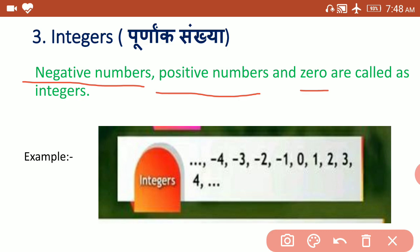These are the negative numbers: 0, 1, 2, 3, 4 and so on — that means all negative numbers, 0, and all positive numbers are called as integers.